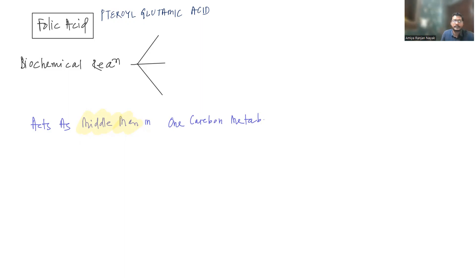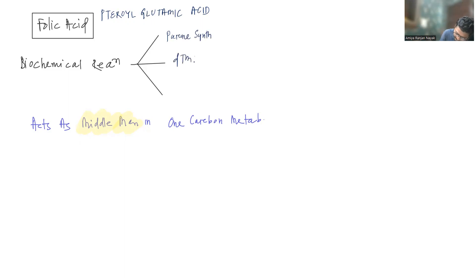First of all, we need to understand what biochemical reactions folic acid is going to take part in. There are three reactions: one is purine synthesis, the next one is dTMP synthesis, and the third one is methionine synthesis.